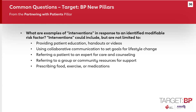Another common question involves the Partner with Patients pillar around assessment of modifiable lifestyle risk factors: what do you mean by intervention? There are a variety of ways to intervene — providing handouts and educational materials, goal setting and collaborative communication to set lifestyle improvement goals, referring a patient to a dietitian or community resource for a cooking class, prescribing food or exercise, or prescribing medications to support them with modifiable lifestyle risk factors including diet, nutrition, physical activity, and use of tobacco or alcohol.